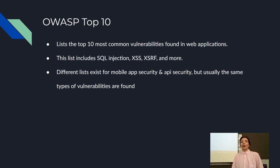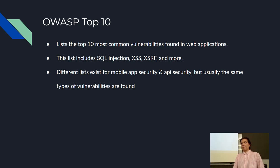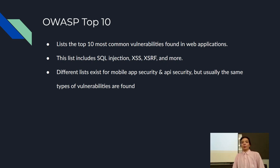Some stuff on the OWASP Top 10 isn't technically related to code — it includes things like misconfigurations, default passwords, and default credentials. There are different lists for mobile app security and API security, but more often than not, the same types of vulnerabilities are found across all of them.